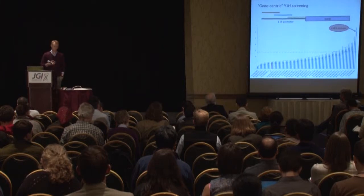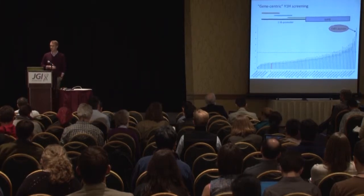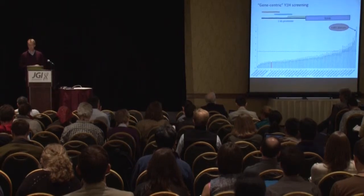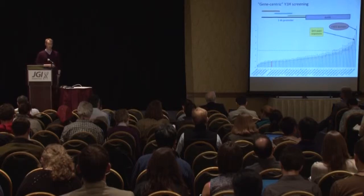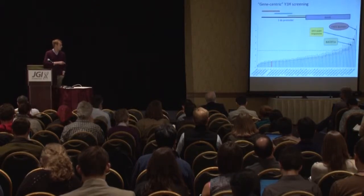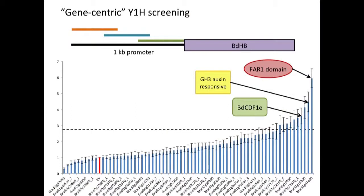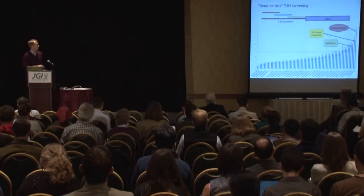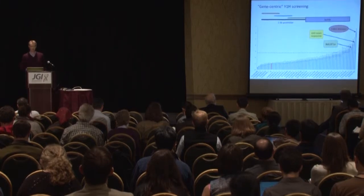We got some interesting hits that were significant above a two-standard-deviation threshold. Particularly, the most intensive interaction was with a protein containing a FAR1 domain, which is involved in light sensing. There was also a GH3 auxin-responsive element that interacted, as well as this Brachypodium ortholog of the Arabidopsis cycling DOF1E factor, which is involved in circadian regulation of flowering time — also involved in the perception of light. So two genes involved in light signaling pathways and one growth-related hormone. This is very preliminary hot-off-the-plate-reader data, and I look forward to confirming and characterizing it further in plants.